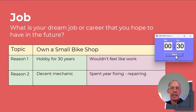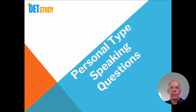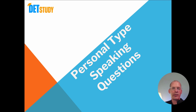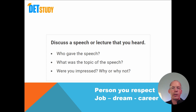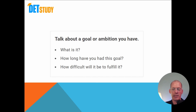The file is downloadable — go through it again and again. Now let's move on to the most important part: bringing it all together for Read then Speak and Listen then Speak personal question types. We're trying to figure out how to apply core ideas to random questions. For example: 'Discuss a speech or lecture that you heard' — you could use Person: a lecture from someone you respect, or Job: a lecture about a career you hope to get. 'Talk about a goal or ambition that you have' — that's an easy one: Job, dream, goal. We've practiced this in our core ideas.